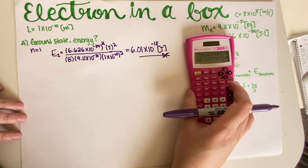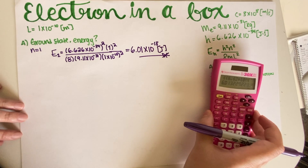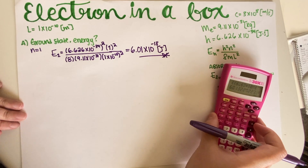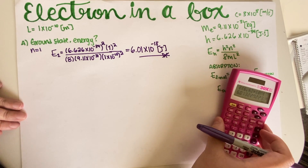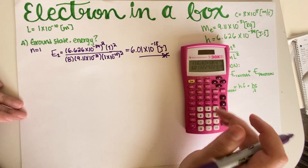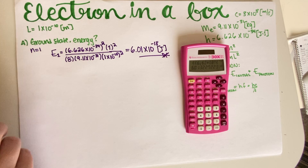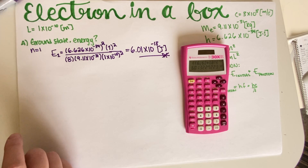This was just a matter of remembering that the ground state is n equal to 1 and then applying the definition to get our E₁ result.